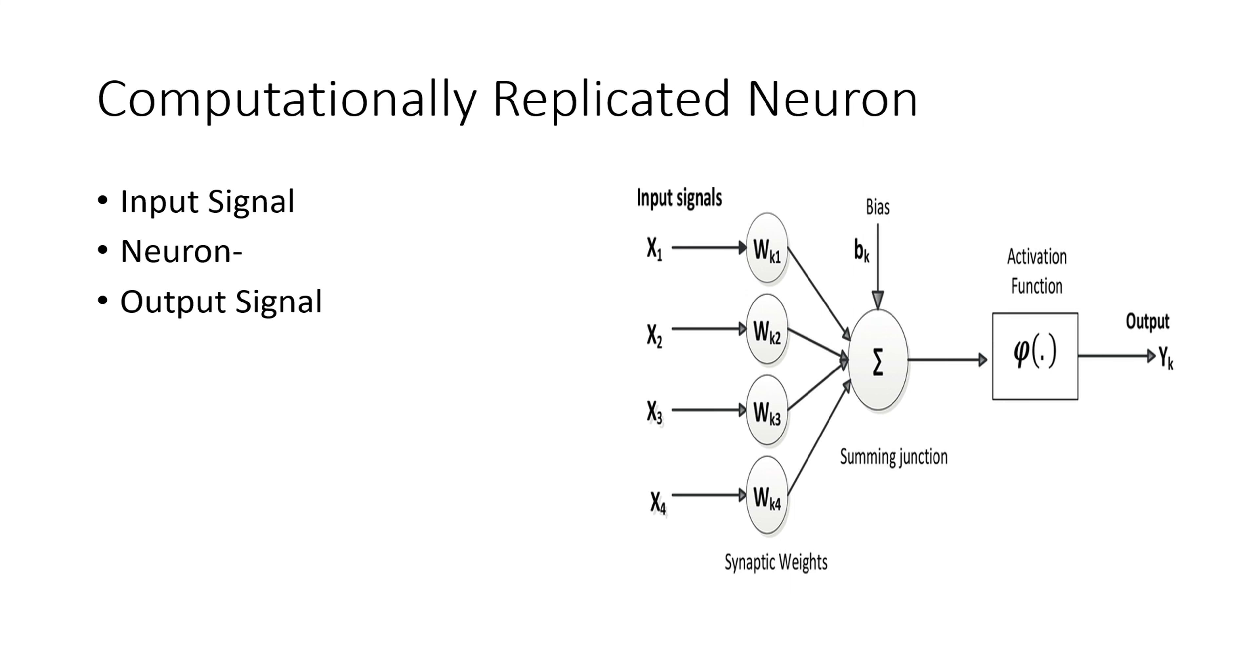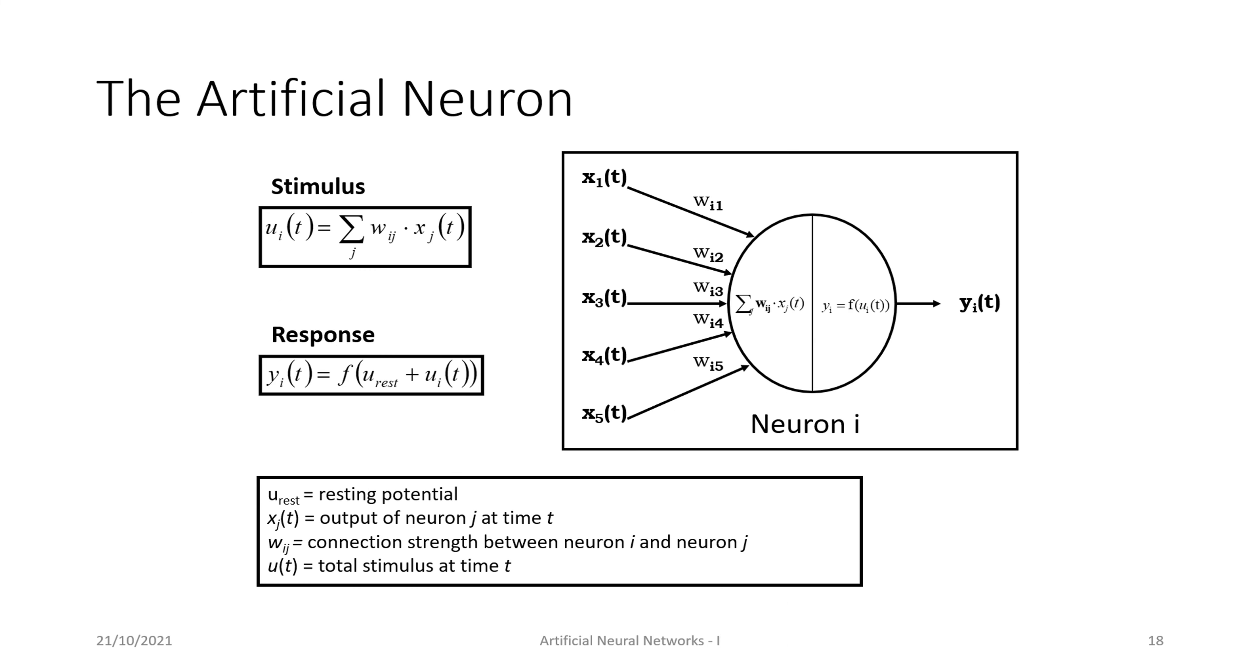This mathematical computation gives us the same results which the biological neuron does. We are replicating supreme intelligence into human-made intelligence, or what we refer to as artificial intelligence. This is what will create the artificial neuron.